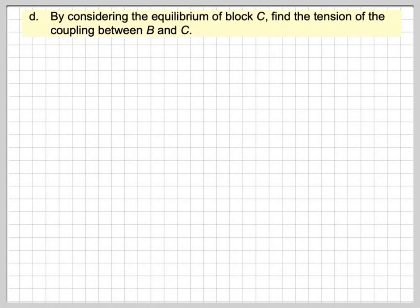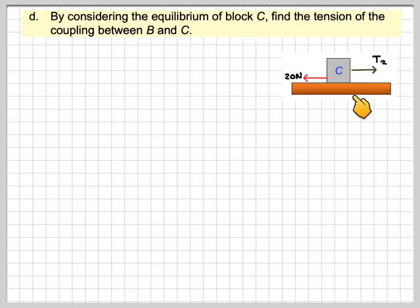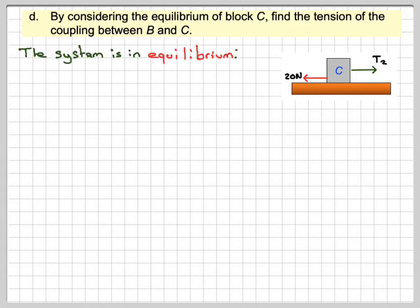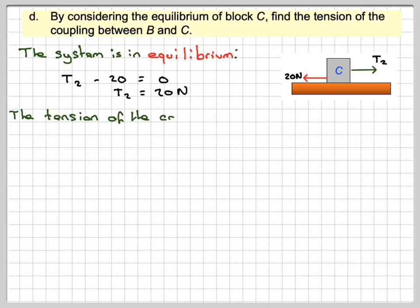By considering the equilibrium on block C, find the tension of the coupling between B and C. Drawing block C: this just has T2 and the 20 newtons frictional force. Again, the system is in equilibrium, so T2 minus 20 is equal to 0. That gives us T2 equals 20 newtons. Therefore, the tension of the coupling between B and C is 20 newtons.